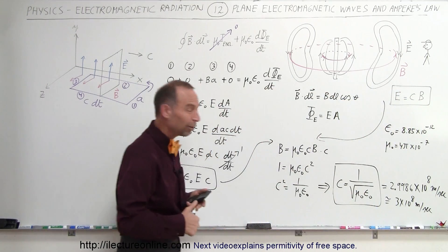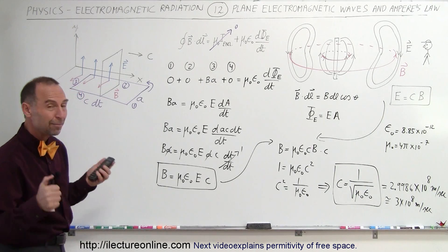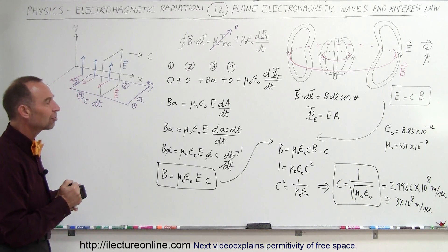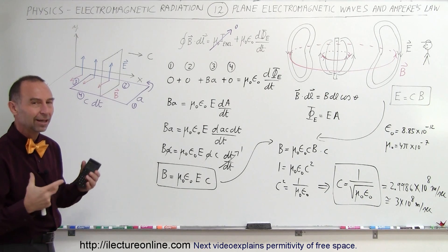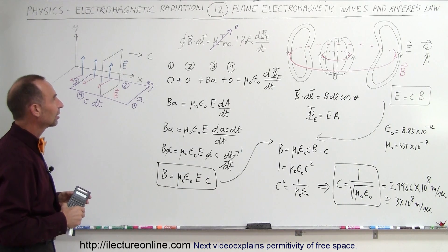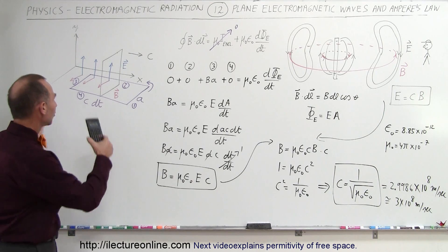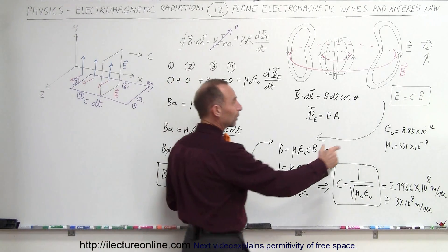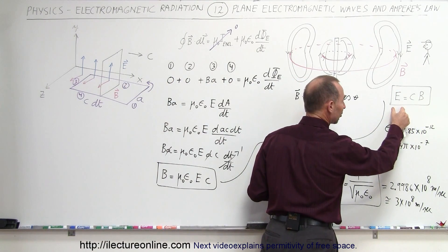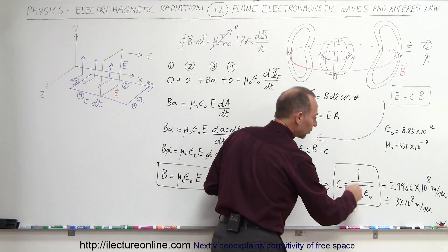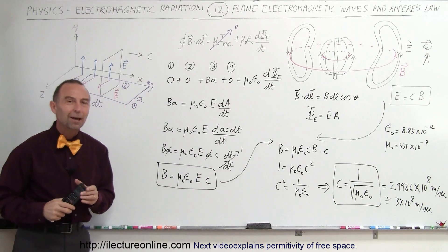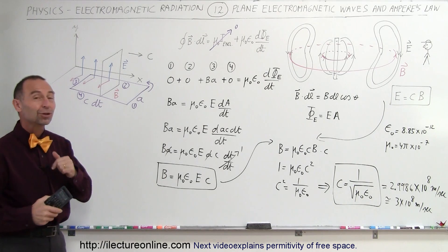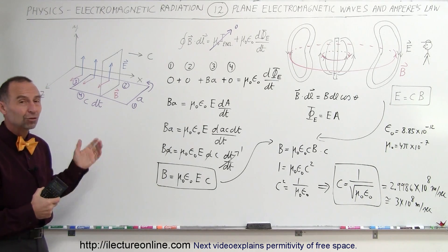And that was discovered by Maxwell more than 100 years ago. He was able to mathematically, using his equations combined into a single organized fashion describing electromagnetic radiation, determine the speed of light — an amazing discovery, simply by using Gauss's Law, Ampere's Law, and Faraday's Law. So we now have two very important discoveries: the relationship between E and B — the electric field oscillations and the magnetic field oscillations — and the relationship of the speed of light with the permeability and permittivity of free space. Keep watching, because we have more on describing electromagnetic radiation using these equations.